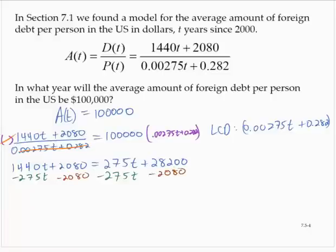So let's see, 1,440 minus 275 is 1,165t is equal to, and 28,200 subtract 2,080 is 26,120.